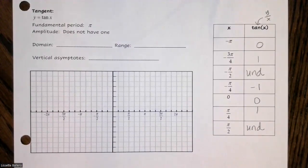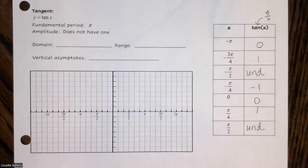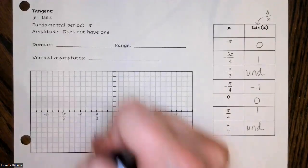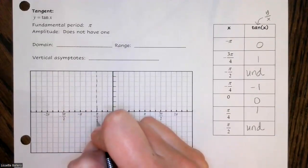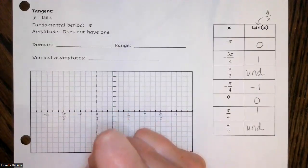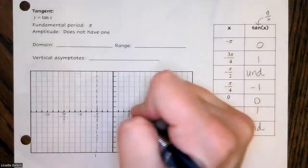We're going to graph these points. If you remember back from rationals, when we had an undefined value — a zero in the denominator — that created a vertical asymptote. So we're going to have a vertical asymptote everywhere it's undefined. In this case, that's at negative π/2 and at π/2.